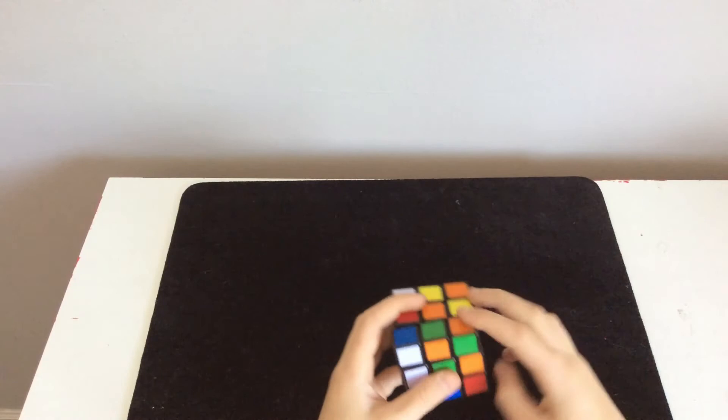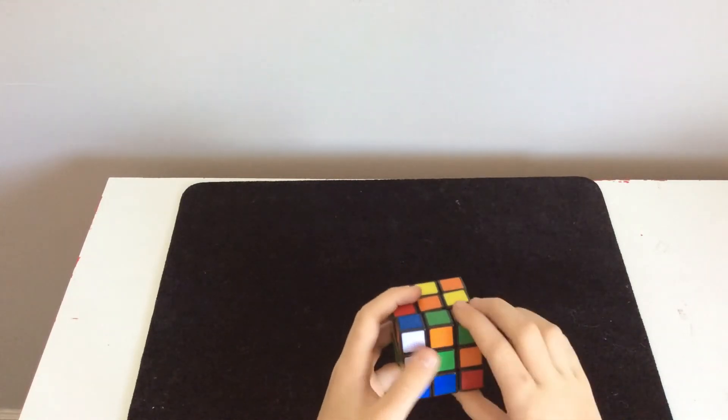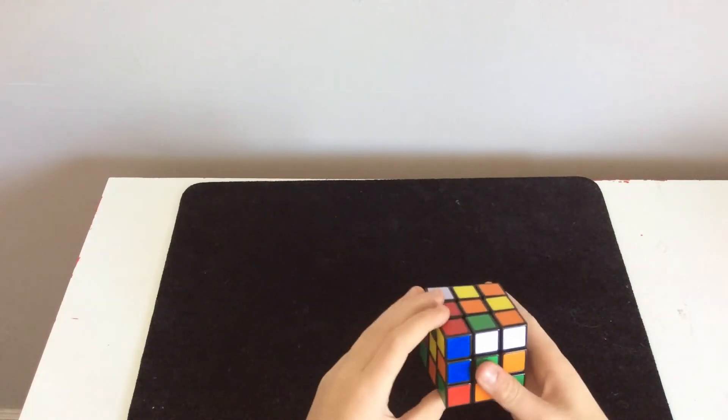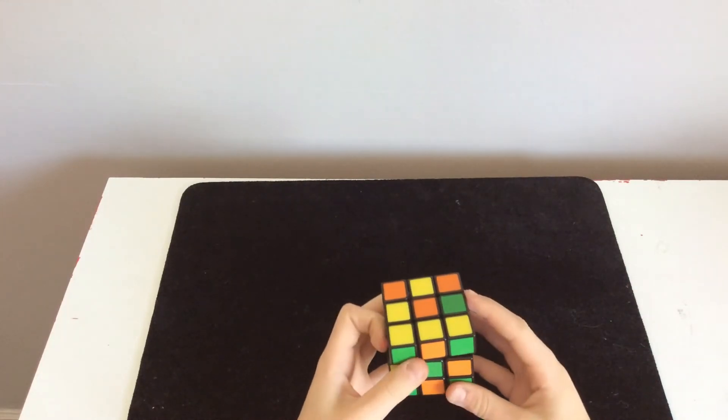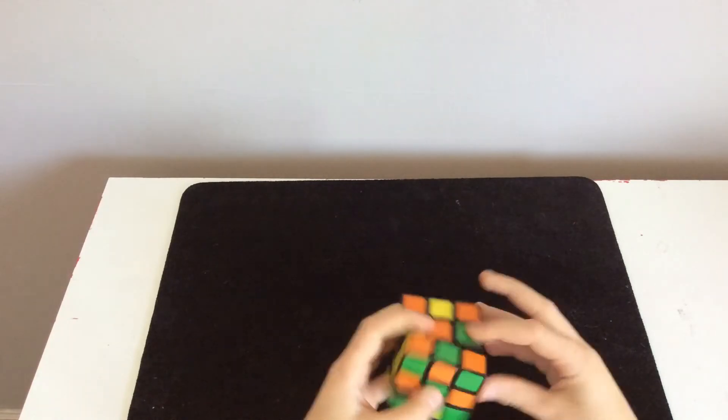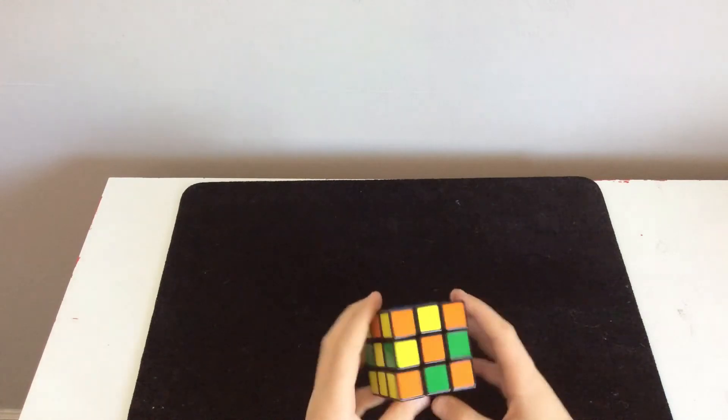What you're going to do is you're just going to undo those moves that you did. You'll do front, then you'll do left 2, then you'll do up inverted, and then you'll do F prime. And then it'll get you back to this.